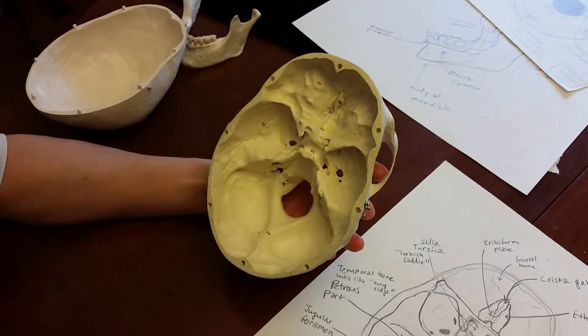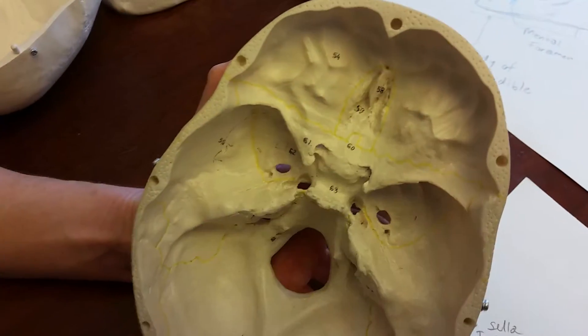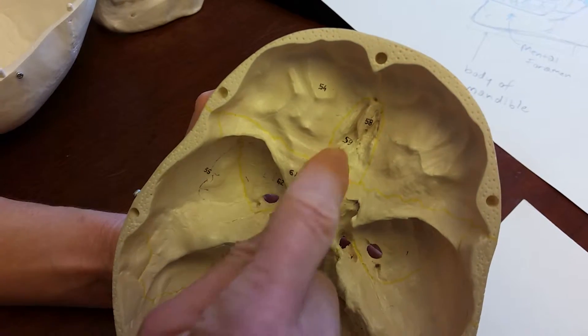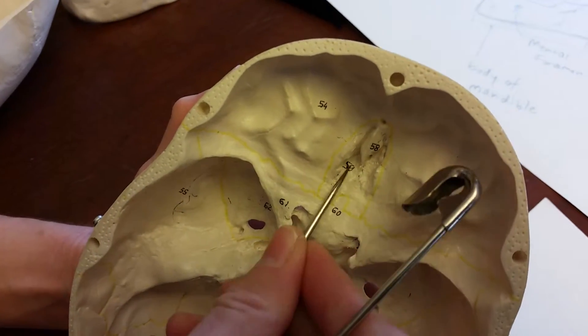Next, let's look at the ethmoid bone. The ethmoid bone is best seen from the inside of the skull. There are two features of the ethmoid bone you need to know. This flat part here that's slightly perforated is called the cribriform plate.